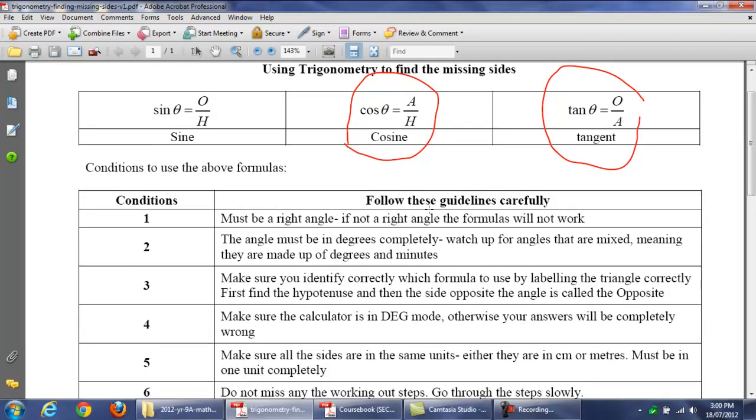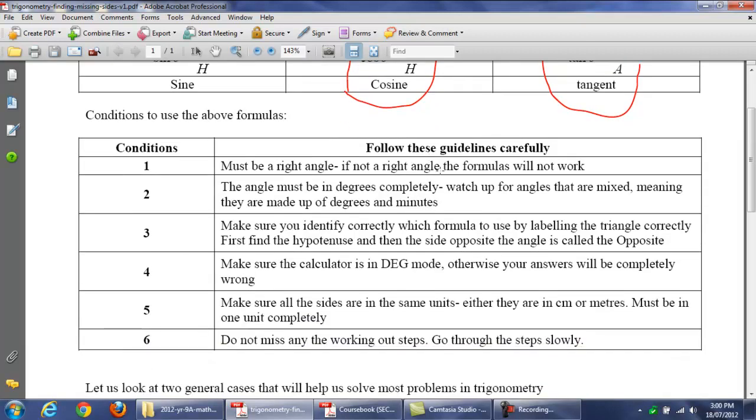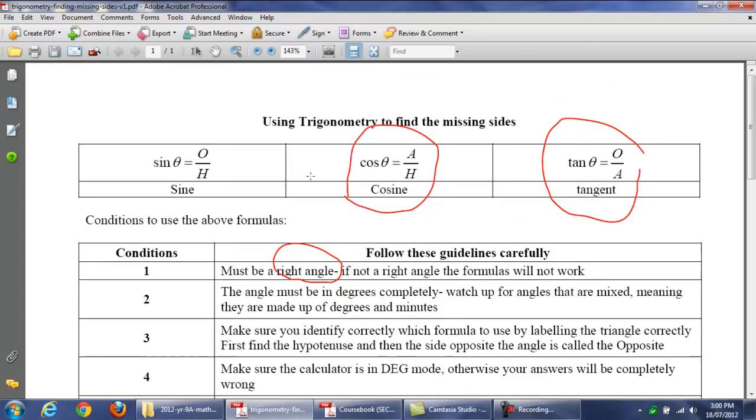Let's look at the six steps, the six conditions that must be met. First of all, the triangles that we will be discussing are right angle triangles. Now, if the triangle is not a right angle triangle, then these formulas here will not work. So, keep that in mind.